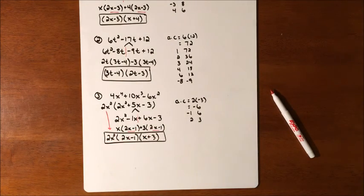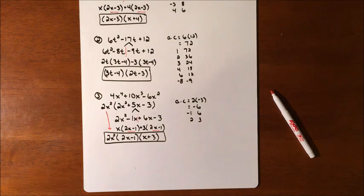And that is factoring trinomials with a leading coefficient not equal to 1 using the AC method.